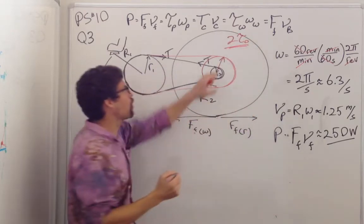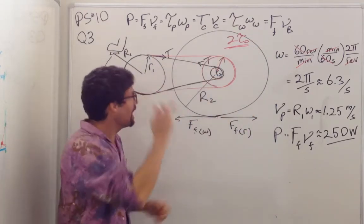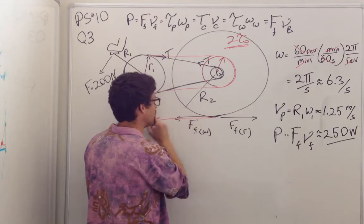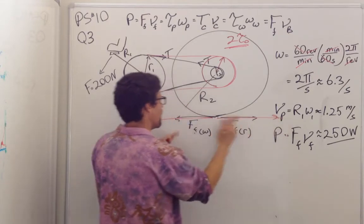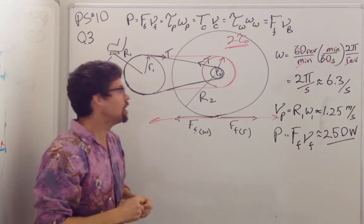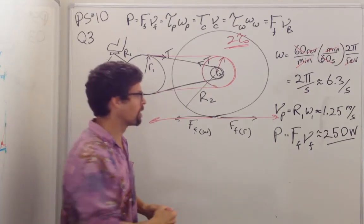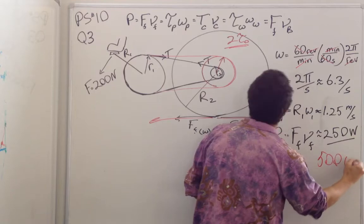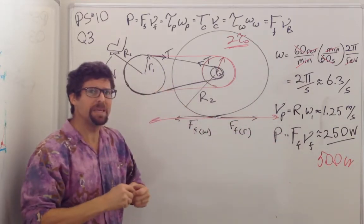I have 2 times the torque on this wheel, and that's going to provide 2 times the force pushing the ground back, 2 times the force pushing the bike forward. So I've doubled my power. The power is now 500 watts.